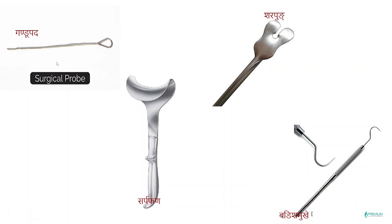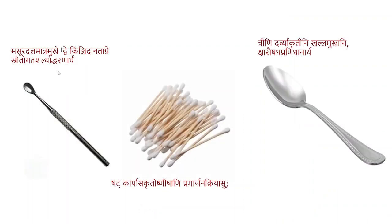The gandupada mukha serves as a surgical probe. Sarpapada mukha shalaka are retractors. Sharapukha mukha are depressors used in orthopedic and oral surgery. Badisha mukha are hooks frequently used in dental surgery. Mazuda dalamatra mukha are scoops. Darbya mukha are smooth spoon-like instruments used to transfer fluid. With the evolution of plastic and rubber materials, we now use droppers and similar instruments for fluid transfer instead.